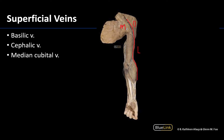The more medial vein is going to be more in the arm region and this is the basilic vein. So the cephalic vein is lateral, and the basilic vein is medial.